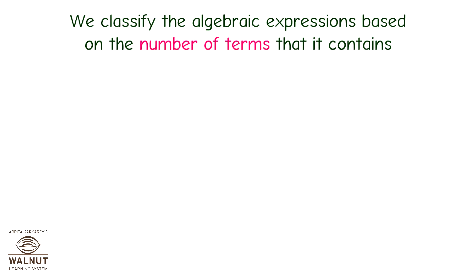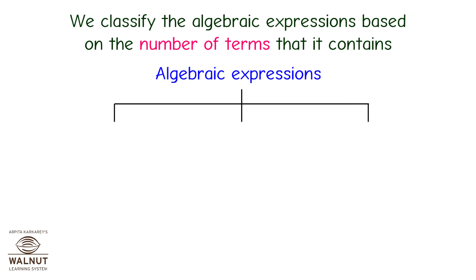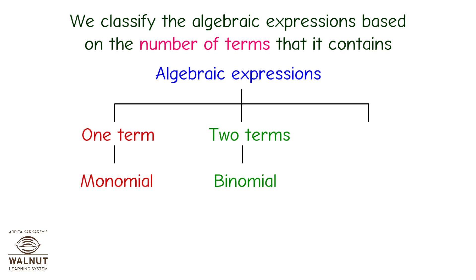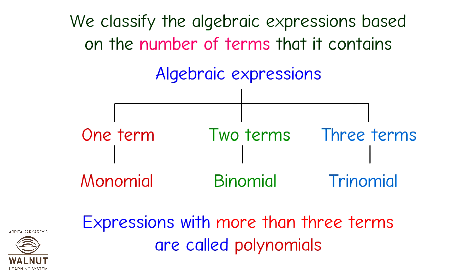How do we classify algebraic expressions? We classify algebraic expressions based on the number of terms they contain. If they have one term, they are called a monomial. Two terms — binomial. Three terms — trinomial. Expressions with more than three terms are called polynomials.